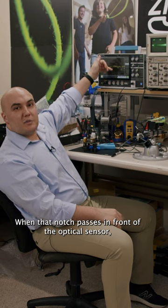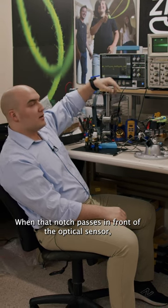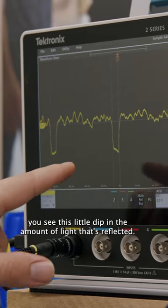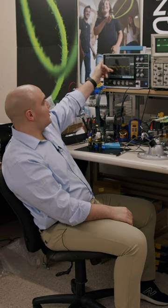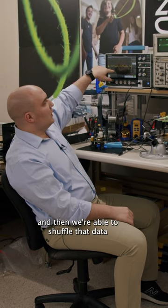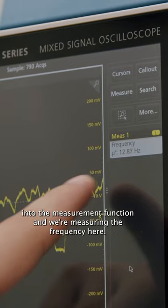When that notch passes in front of the optical sensor, you see this little dip in the amount of light that's reflected. We're able to trigger off of each of those dips and then we're able to shuffle that data into the measurement function.